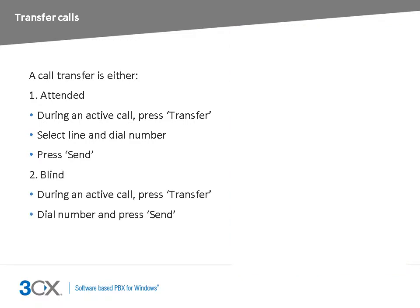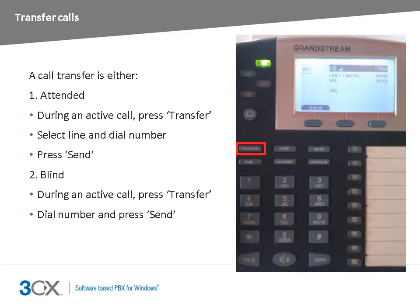In the case of a blind transfer, the call is transferred immediately without any interaction between the person performing the transfer and the receiving party. To perform a blind transfer whilst already on an active call, press the transfer button. The caller is placed on hold. Dial the number and press the send button. Once the receiving party picks up the call, the transfer is complete.